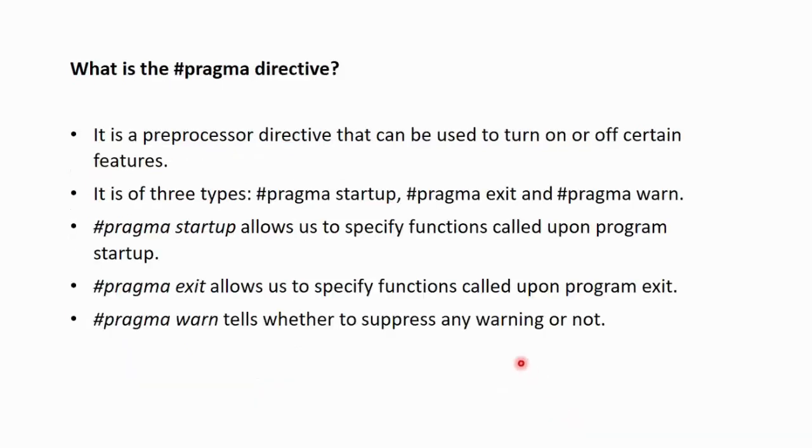Next question, what is a #pragma directive? It is a preprocessor directive that can be used to turn on or off certain features in a C program. It is of three types: #pragma startup, #pragma exit, and #pragma warn.